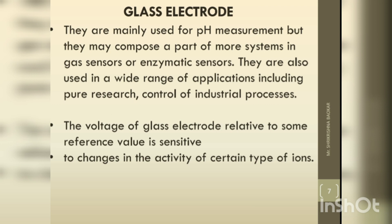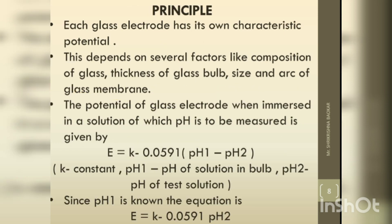The voltage of the glass electrode relative to some reference value is sensitive to changes in the environment and the activity of certain types of ions. Each glass electrode, being a pH-sensing electrode, has its own characteristic potential because of the ion exchange nature of the glass membrane. This depends on several factors like composition of glass, thickness of glass bulb, size, and area of the glass membrane.